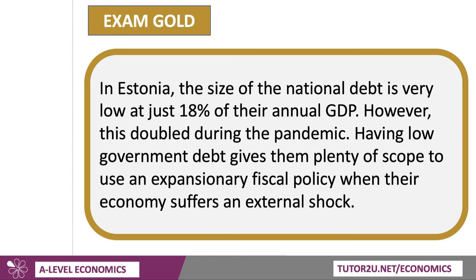Thinking about Estonia, one of the Baltic states, the size of the national debt is low, but it's doubled during the pandemic. Having that low debt, in theory, gives these countries plenty of scope to use expansionary fiscal policy when the economy suffers an external shock. And that's exactly what happened in Estonia when the pandemic hit — the Estonian government was able to use expansionary fiscal policy, including wage subsidies and debt moratoriums on businesses, in order to absorb the shock effects of the pandemic.